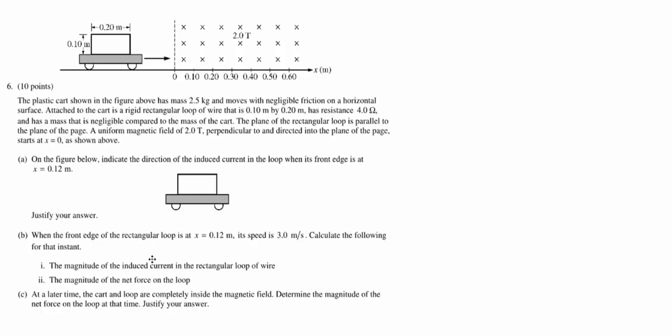So part A, we want to indicate the direction of the current in the loop when its front edge is at 0.12 meters. It's actually really important to pay attention to that number, because the whole thing is 0.2 meters long. So if I were to replicate this and take this car and drive it in, when its front edge is at the 0.12 meter mark, I'm going to lock this down.